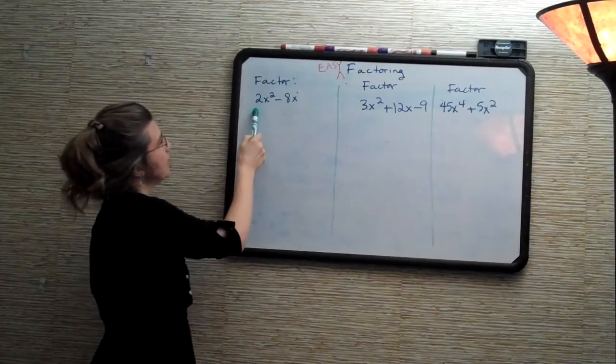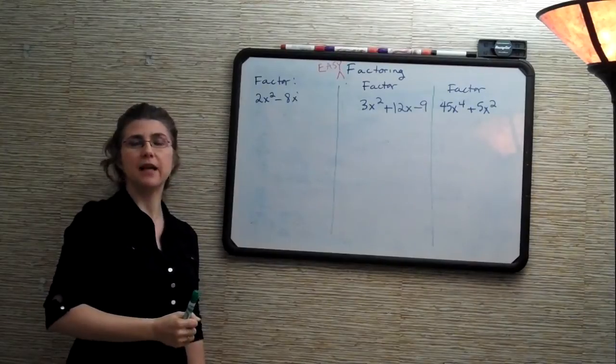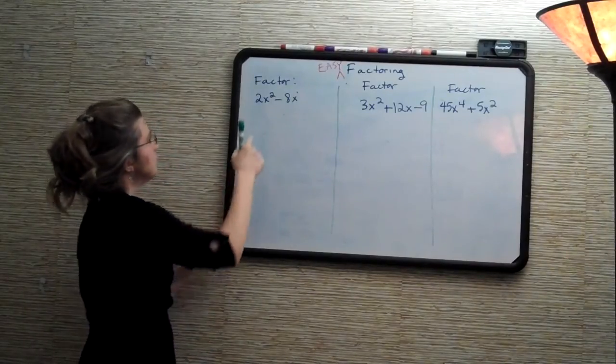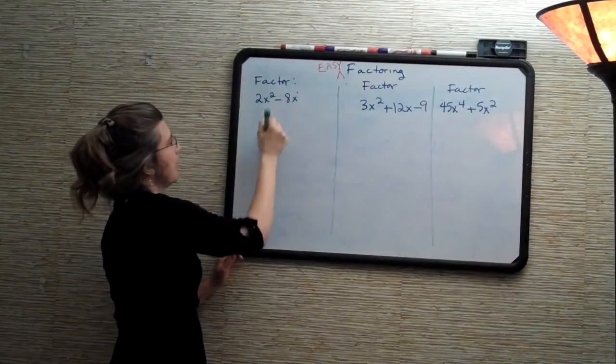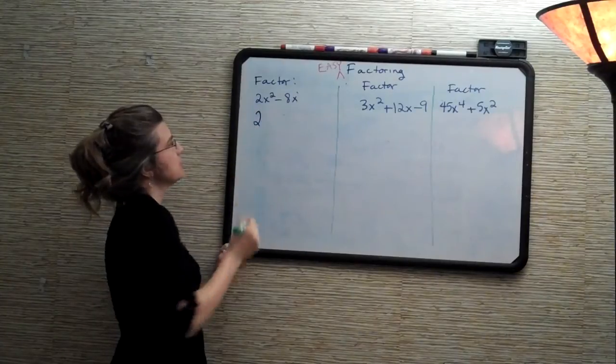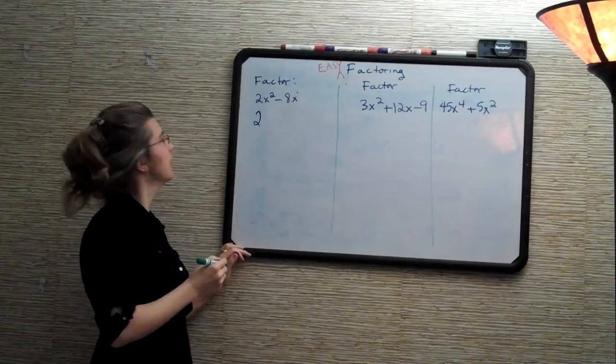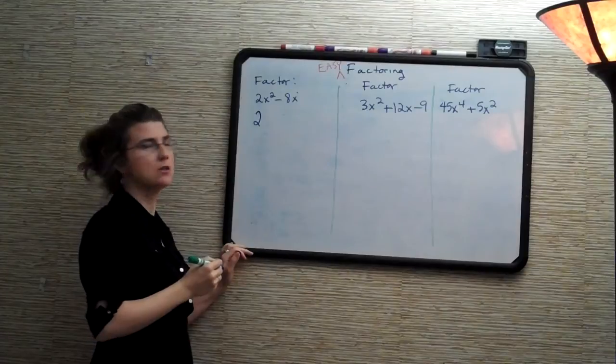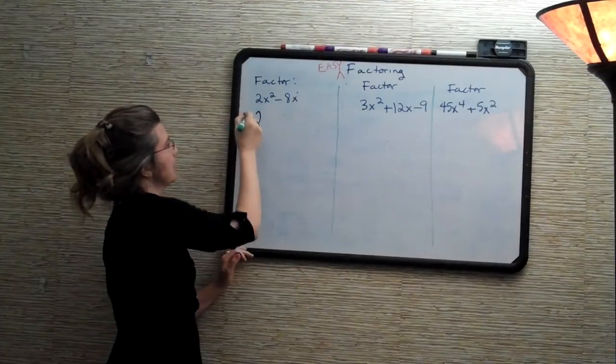So what is the greatest common factor of 2x squared and minus 8x? Well, the greatest factor of 2 and 8 is 2, since that is the largest number that divides evenly into 2x squared and minus 8x, or the largest number that divides evenly into 2 and minus 8.